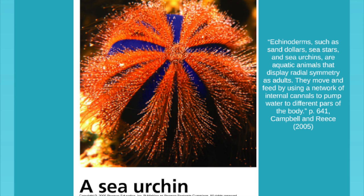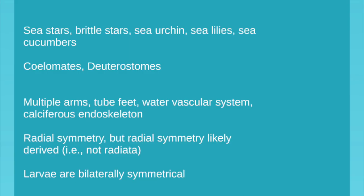As we leave arthropods, we make a jump to echinoderms. They are invertebrates, but they are invertebrate chordates — they're a chordate like us, but they're invertebrates and we're vertebrates. They start their life as a bilateral larva and end their life as an adult radial creature with radial symmetry. The word echinoderm just means spiny skin. Not only are they coelomates like us, not only are they chordates like us, but they are finally deuterostomes — they develop like us as an embryo. These include sea stars, brittle stars, sea urchins, sea lilies, and sea cucumbers.